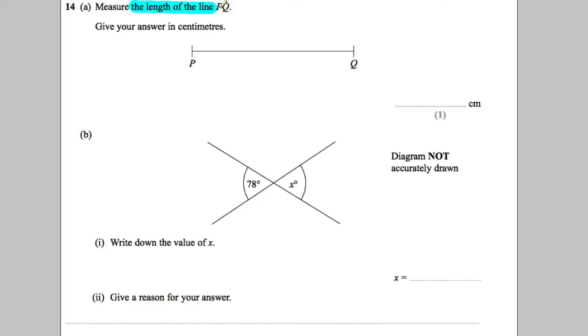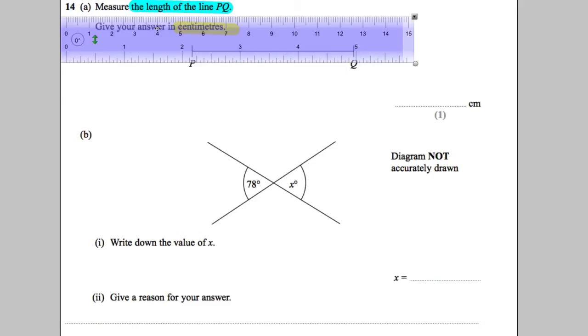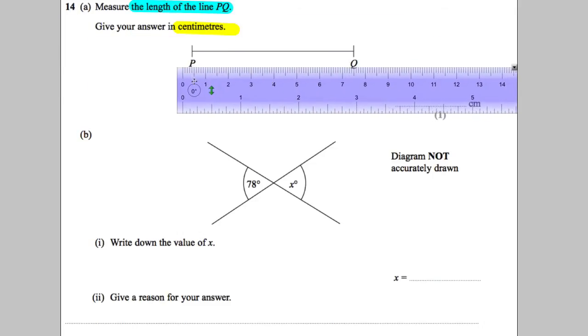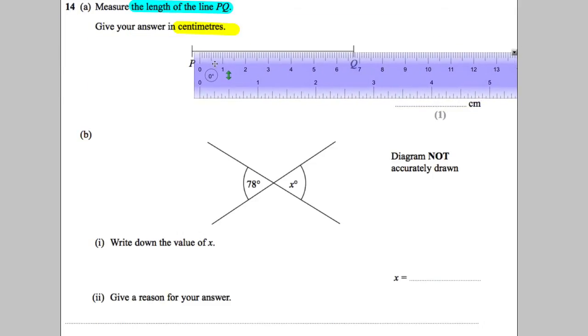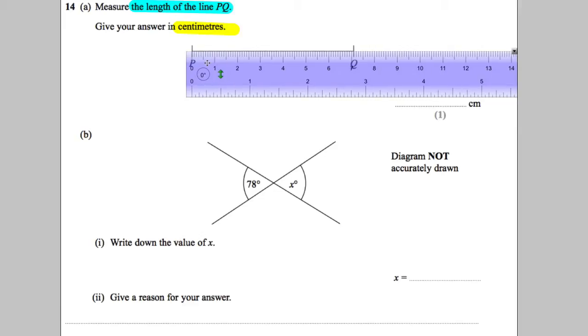For question 14, we're asked to measure the length of the line PQ. Give your answer in centimeters. So we need to get our ruler out. Make sure you've got your ruler for the exam and put your ruler—make sure the zero goes on one side. Do not do this, that's a mistake. With the zero in line with the zero on one side.